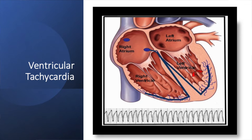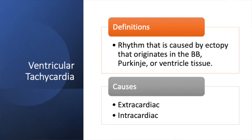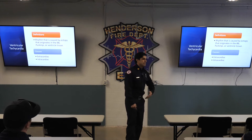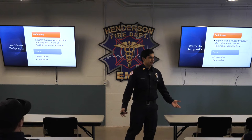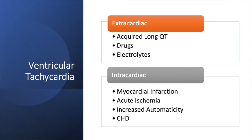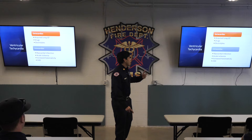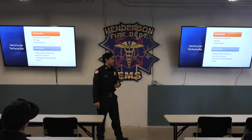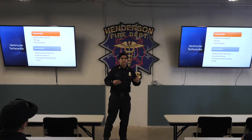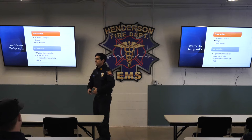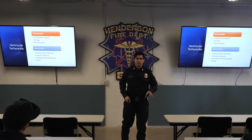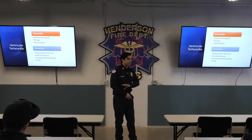VTAC — definitions. When we talk about where VTAC originates, it's usually in the ventricular tissue. It can occur in the Purkinje system or bundle branches but that's less common. More commonly you get some type of ischemic or infarct producing this arrhythmia. Intracardiac and extracardiac causes: extracardiac includes electrolytes and drugs; intracardiac includes myocardial infarction, acute ischemic changes, and in children, congenital heart defects. Wide complex tachycardia is very uncommon in children, but when it occurs it's usually due to a congenital heart defect — some type of hole in the heart.